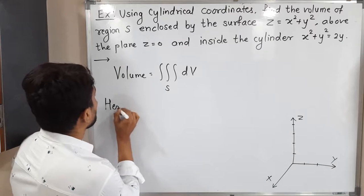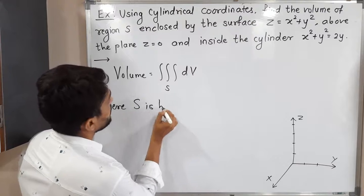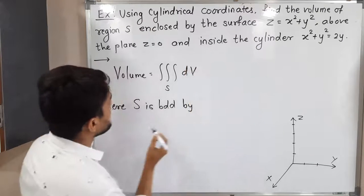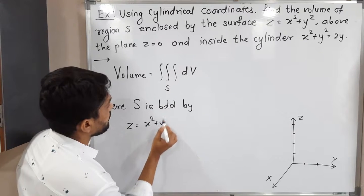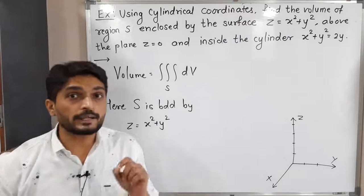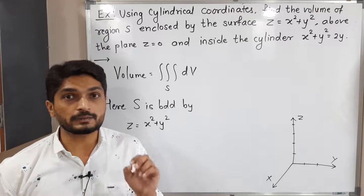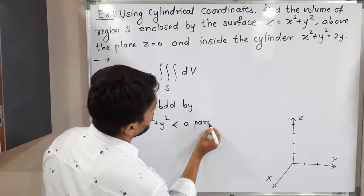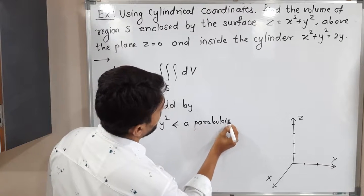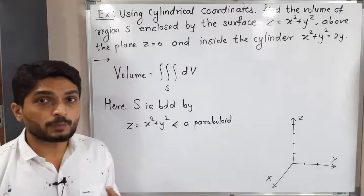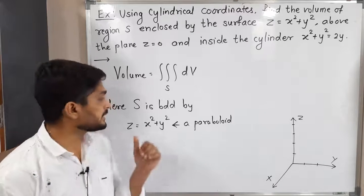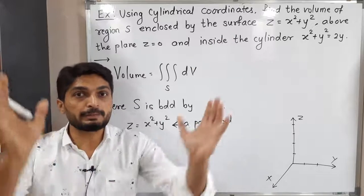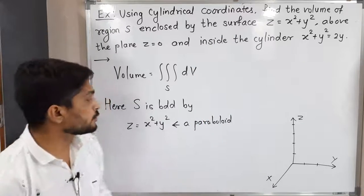S is bounded by z = x² + y². The power of z is one and the power of x and y is two, so we can say this is a paraboloid. Since the power of z is one and it is around the z-axis with a plus sign, this paraboloid will open in the upward direction.